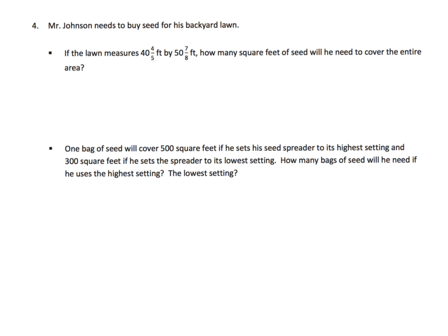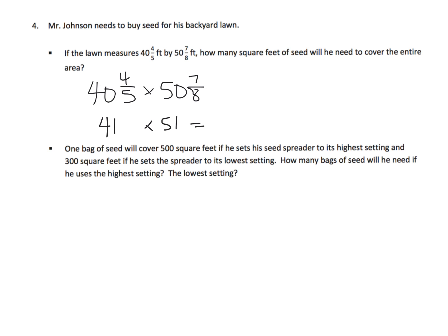Mr. Johnson needs to buy seed for his backyard lawn. The lawn measures 40 and four-fifths feet by 50 and seven-eighths feet. In real life we'd round to 41 by 51, but the problem requires us to use fractions. To find the square footage we multiply 40 and four-fifths times 50 and seven-eighths. Since this is close to 40 times 50, we know our answer is approximately 2,000 square feet — that's a big answer.